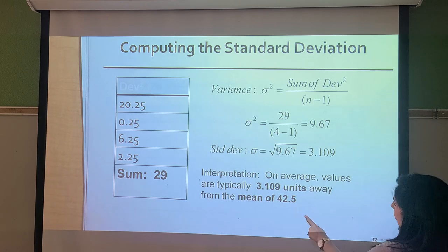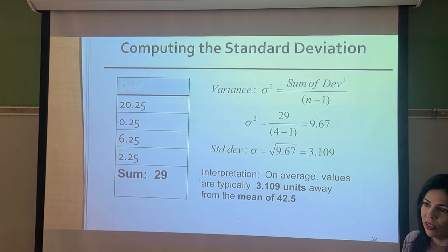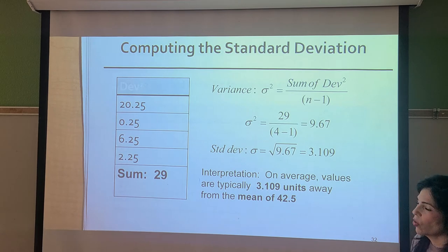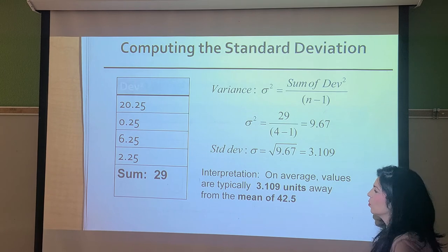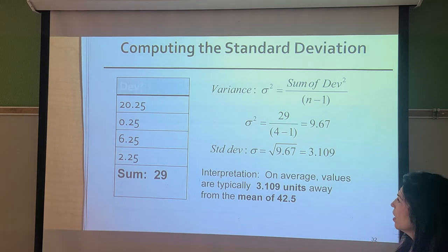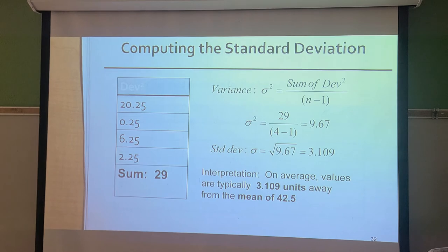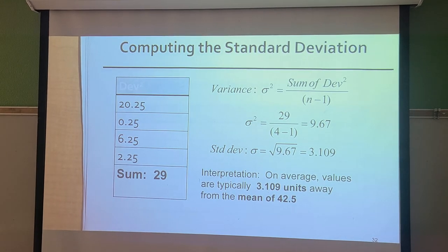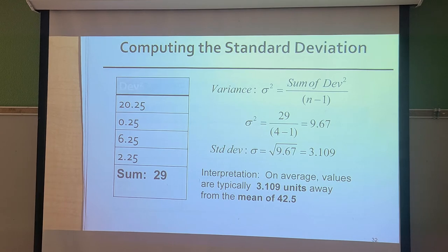Now we take the square root of 9.67, which gives us 3.109. That is our standard deviation. What that means is: on average, whatever these data values are, they're typically 3.109 units away from the mean of 42.5. So in general, looking at the entire data set, the values tend to vary about 3.109 units away from the average.